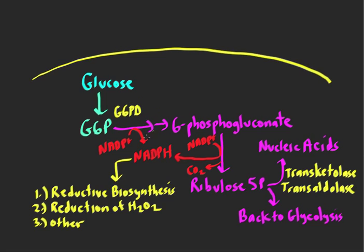This is an oxidative reduction reaction where NADP+ is reduced to form NADPH. There's an intermediate, 6-phosphoglucolactone, that gets hydrolyzed to ultimately make 6-phosphogluconate. The 6-phosphogluconate undergoes another oxidative reduction reaction making another NADPH, and we peel off CO2 — this is where the pentose phosphate shunt gets its name, because now we have a pentose: ribulose 5-phosphate, which can become ribose 5-phosphate for nucleic acid biosynthesis, or undergo reactions to make intermediates like fructose 6-phosphate or glyceraldehyde 3-phosphate that re-enter glycolysis.